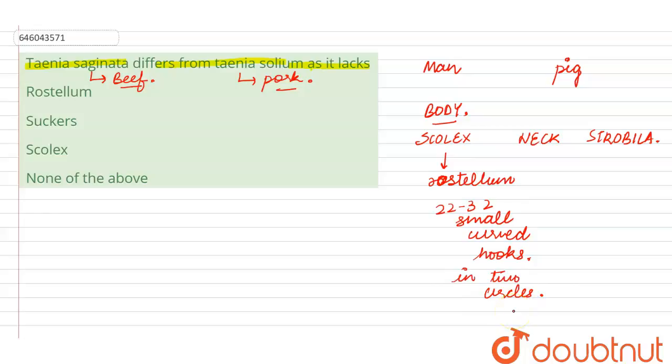The hooks of the posterior circle are much smaller than those of the anterior one. On the middle part of the scolex, there are present four cup-like suckers. These suckers occur as a parasitic adaptation, so that this can attach itself to the intestine of the humans.